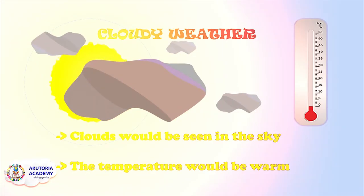Cloudy weather: clouds would be seen in the sky. When we have a cloudy weather, we could also see the sun, though it's usually covered by the clouds. The temperature is warm during this weather.